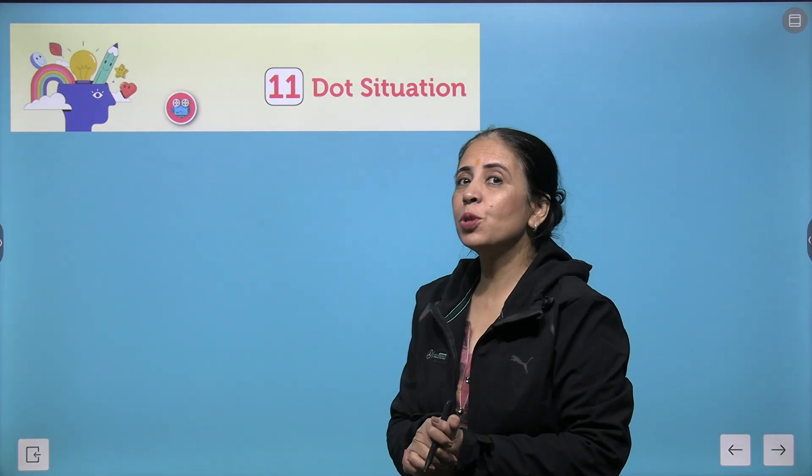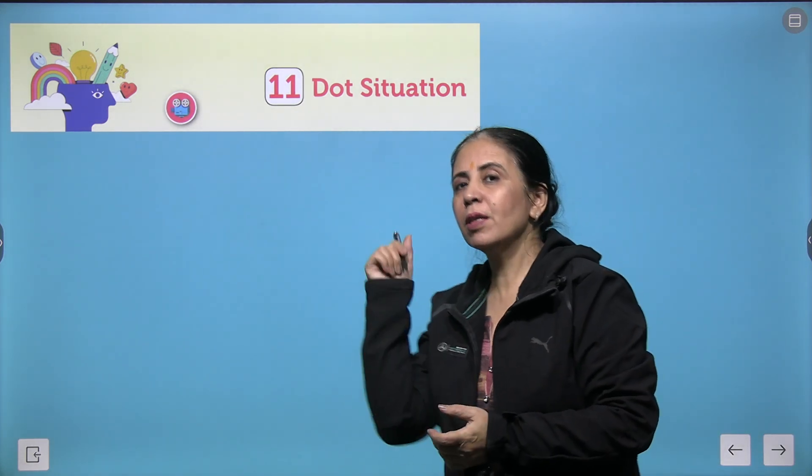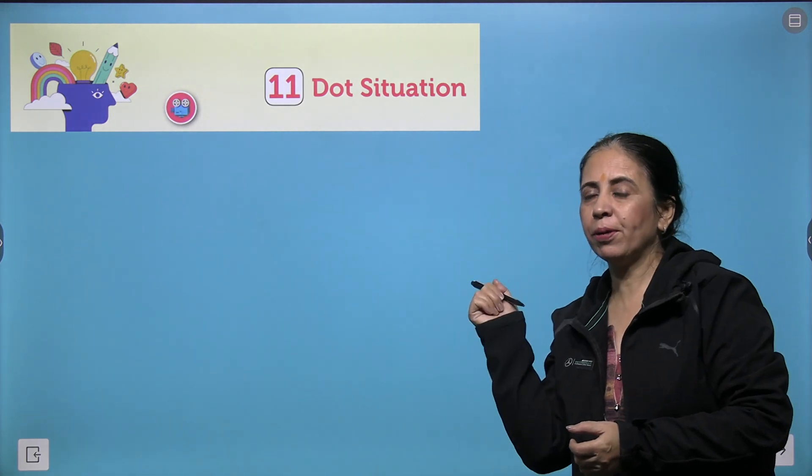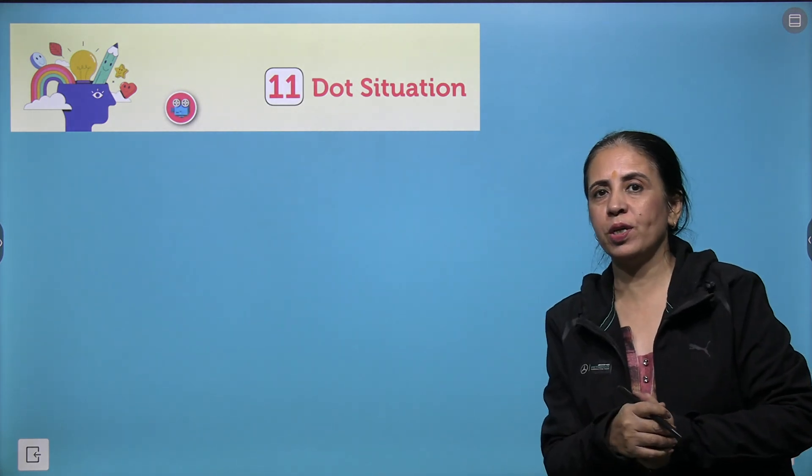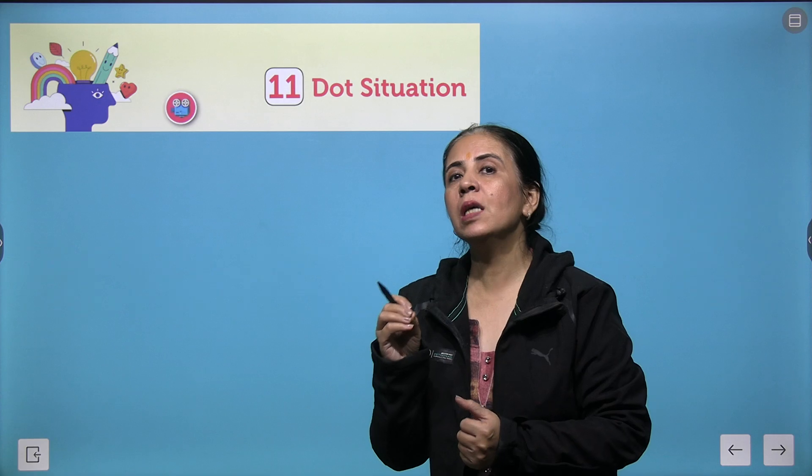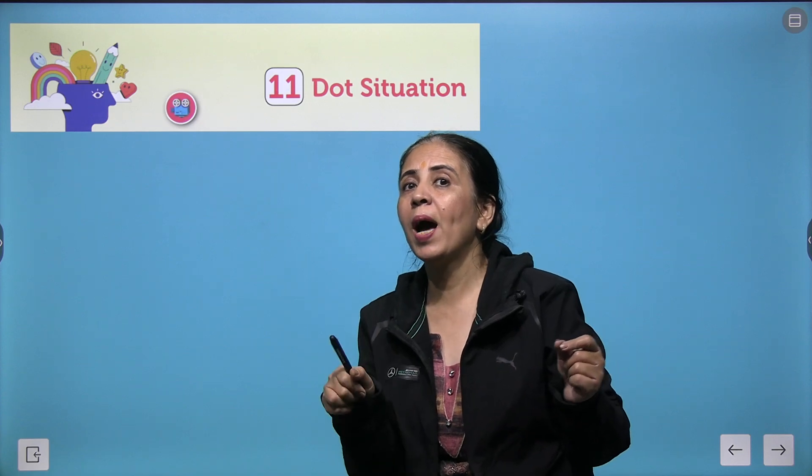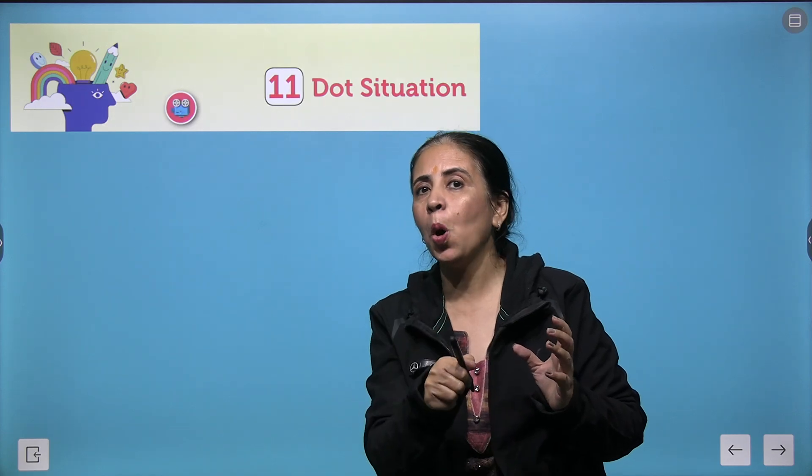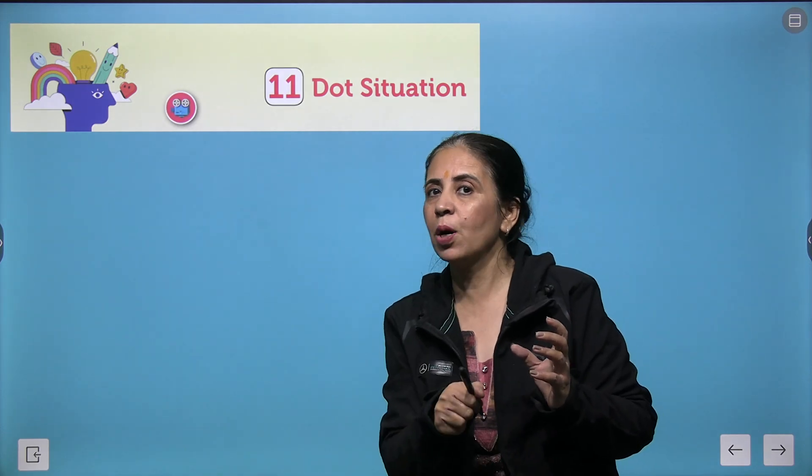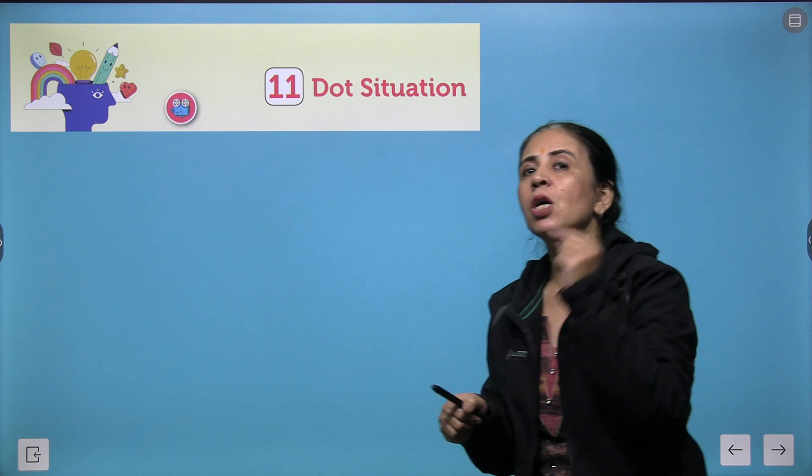Hello great learners, welcome to Grade 8 reasoning book. This is the last chapter, chapter number 11, that is dot situation. Once you learn how to solve questions based on dot situations, believe me, you will learn to analyze data, understand patterns, and your decision-making skills are going to improve. But you need a little practice.